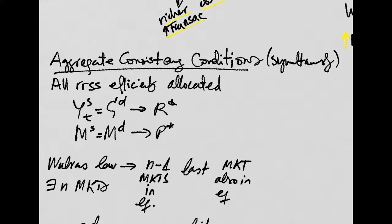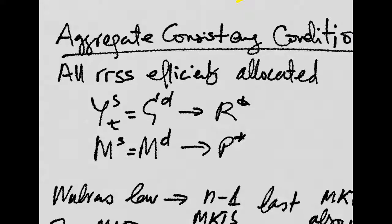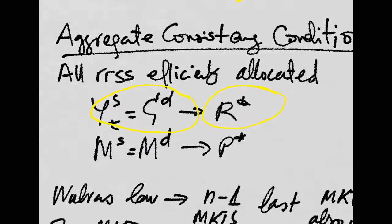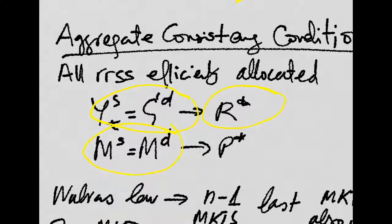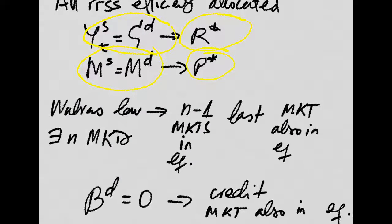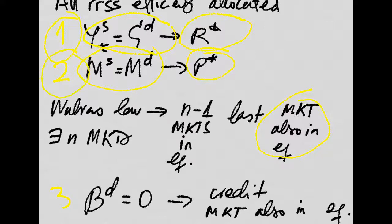We basically have three aggregate consistency conditions which need to be met simultaneously in this model. If all resources are efficiently allocated, then at the point where supply equals demand for commodities, that yields the equilibrium interest rate. And at the point where money supply equals money demand, that yields the equilibrium price level. If we use Walras's Law — which says that if N minus 1 out of N markets are in equilibrium, then the last market is also in equilibrium — the credit market must also be in equilibrium.